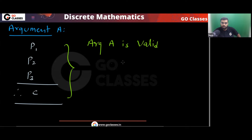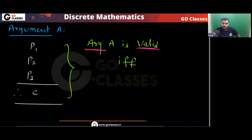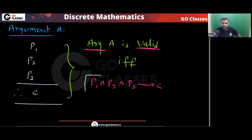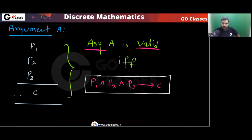...if and only if P1 and P2 and P3 implies C is a tautology. This is the definition we already know: when all the premises are true, then the conclusion must be true. So whenever P1, P2, P3 are true, conclusion must be true — it simply means P1 ∧ P2 ∧ P3 → C must be a tautology.